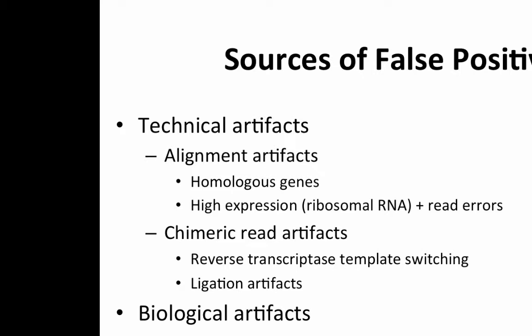Sources of false positives include alignment artifacts and chimeric reads that come from the molecular biology. We can get template switching during reverse transcription and ligation artifacts. These are usually random and don't produce a large number of reads, so filtering predictions with fewer reads gets rid of them. We also have natural sources of rearrangements such as immunoglobulin rearrangements — if your sample contains a lot of immune infiltration that'll be a problem — and other sources like transposons and nuclear mitochondrial insertions.